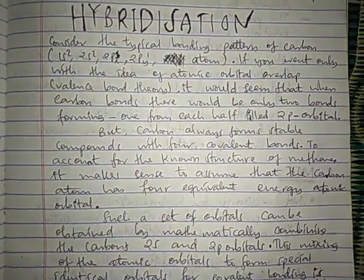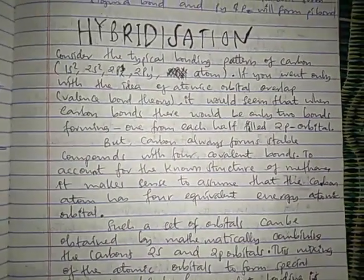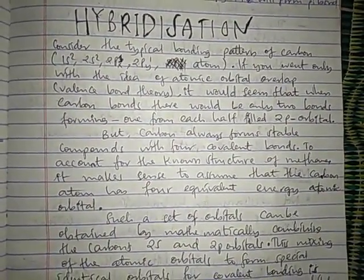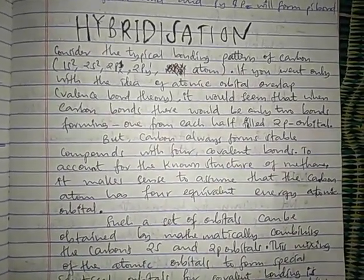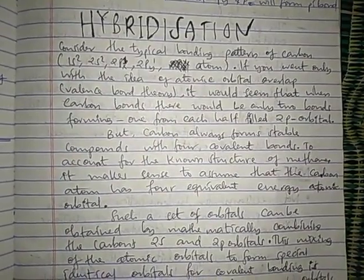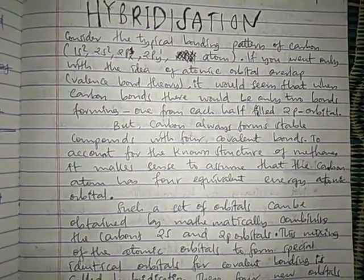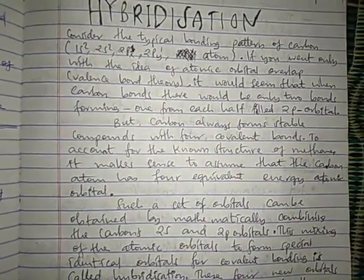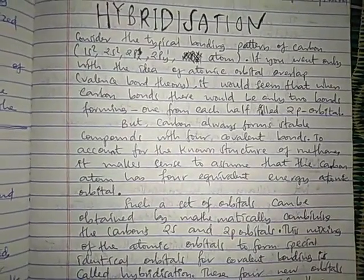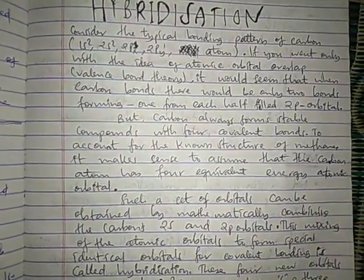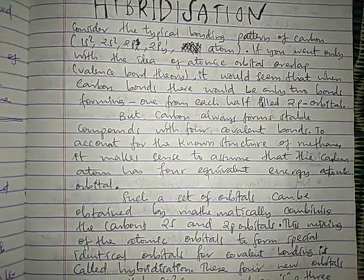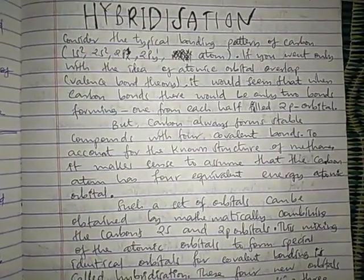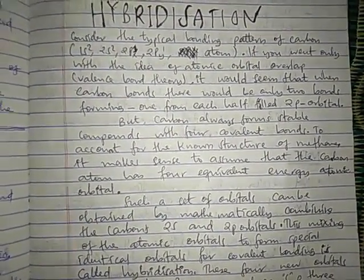Welcome back friends. Today let's look at the introduction to the topic of hybridization. In the previous period we discussed the concept of valence bond theory. Taking an example of carbon, we will consider how many bonds it can form, and from there we shall discuss how hybridization occurs, its mechanism, and the features or characteristics of hybridized orbitals.